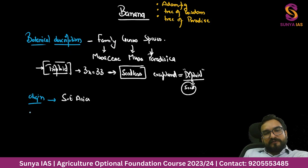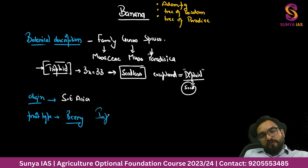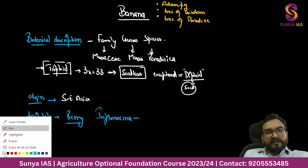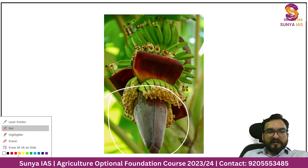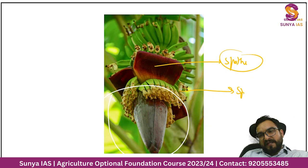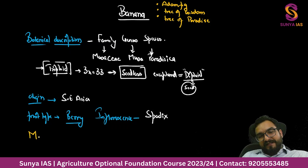The fruit type of banana is known as a berry. The type of inflorescence in banana is spadix - whereas in mango you have a panicle, here you have a spadix. Let me show you the inflorescence structure - this is the spadix. If you go into detail, this part is known as the spathe, and you find spikes. You should know that spadix is the type of inflorescence in banana.